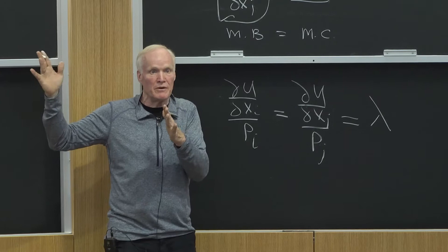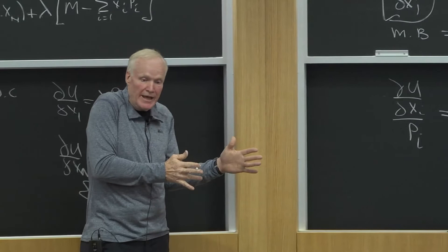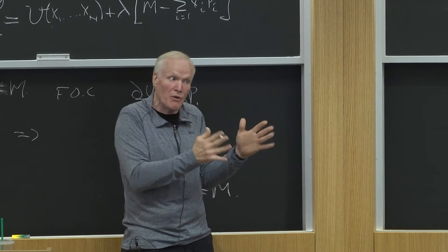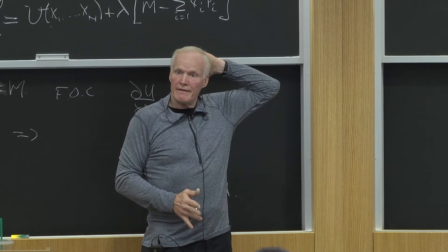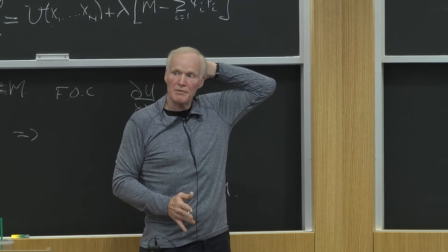Now, if you're at a corner and you weren't consuming any of good j and you were consuming good i, maybe you can't move any further in that direction. So that could happen, but it would only happen if you're at a corner. If I'm consuming some of both, I've got to have these things be equal. Everybody understand that? People understand why that works?